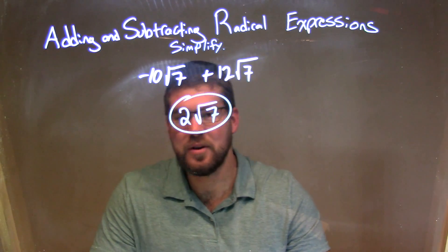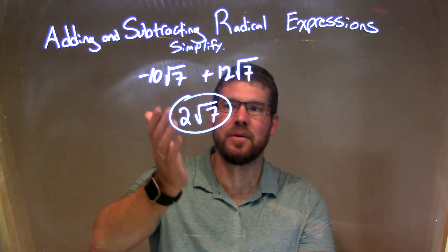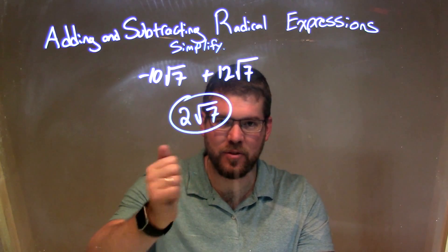And that's it. Pretty simple, pretty quick. Negative 10 plus 12 is 2, and so we have 2 square root of 7 as our final answer.